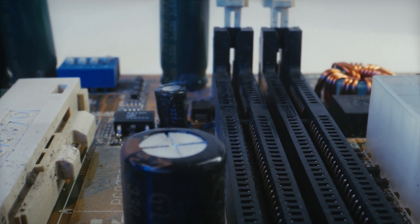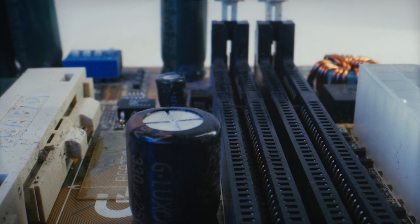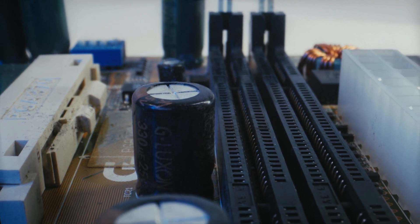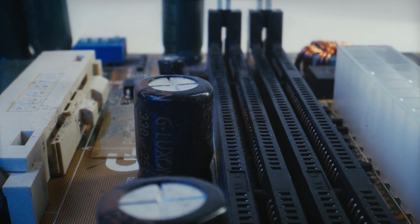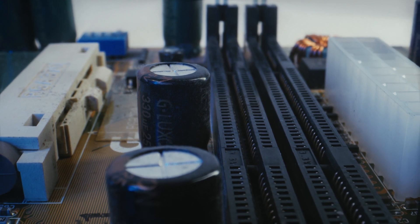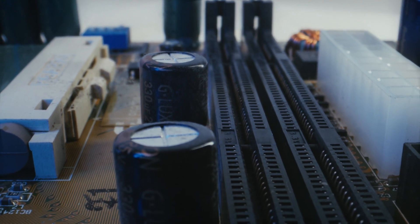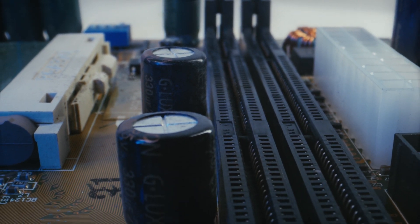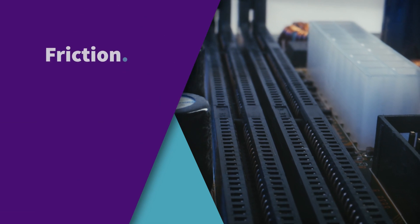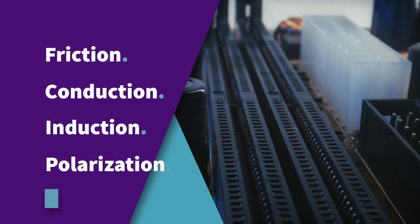An example of this can be seen in capacitors, which store static electricity by arranging charges on opposite plates. In conclusion, these are the four methods by which charges can redistribute themselves to build up static electricity: friction, conduction, induction, and polarization.